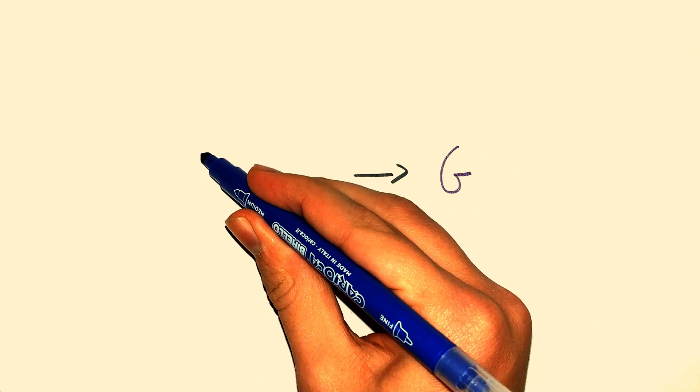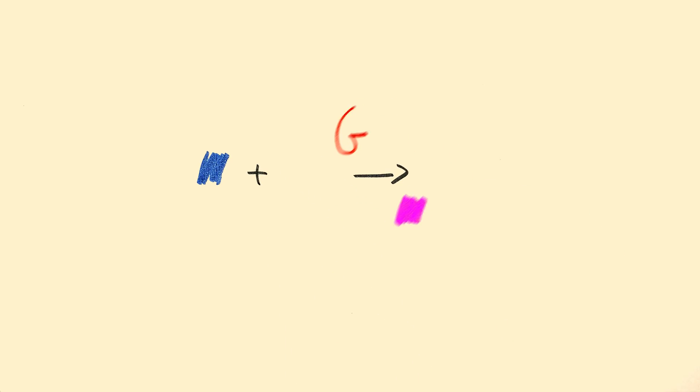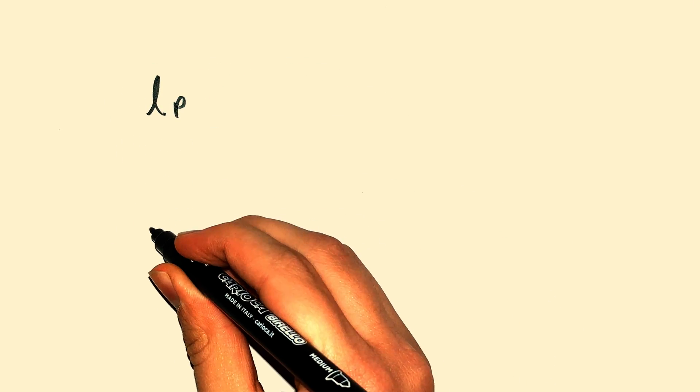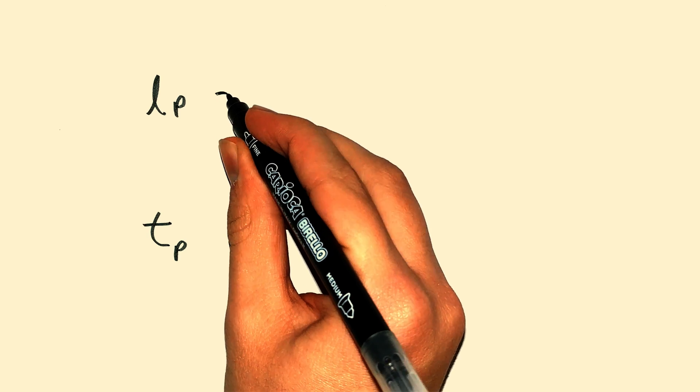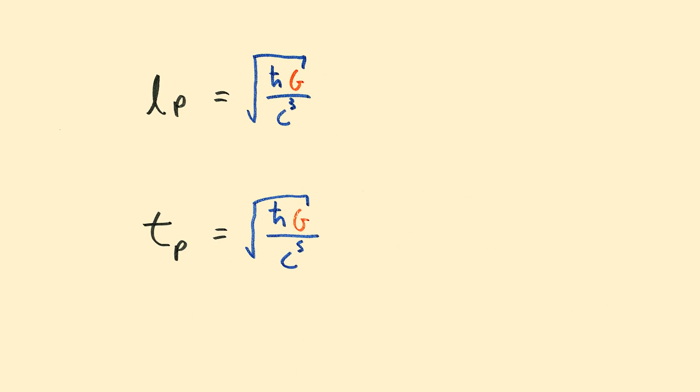G is not derived from anything else. We use G to draw conclusions. Like the example I gave earlier with the Planck length and Planck time. Both of them are derived from G.